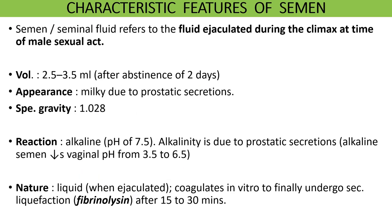The next topic is semen and its characteristics. Semen or seminal fluid refers to the fluid that is ejaculated during the climax of the male sexual act. The average volume of semen per ejaculation is 2.5 to 3.5 ml after an abstinence of two days. It appears milky due to the presence of white prostatic secretion. It has a specific gravity of 1.028 and is alkaline in nature with a pH of 7.5. This alkalinity of semen helps to neutralize the acidic pH of the vagina. Semen is in liquid form when freshly ejaculated, then coagulates in vitro or inside the vagina, and finally undergoes secondary liquefaction after about 15 to 30 minutes.